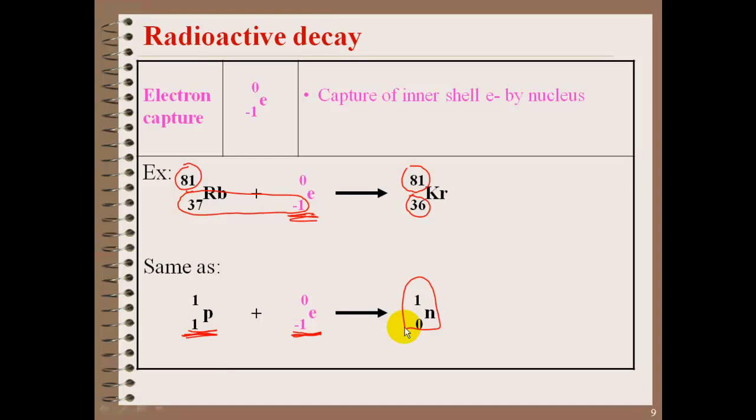When we have rubidium-81 going through an electron capture, it is going to create krypton-81. What ends up happening here is that a proton from rubidium's nucleus will collide with that electron from the electron cloud and creates a new neutron. That neutron will change the number of protons but not change the mass. So a proton and electron will collide and convert into a neutron. It's kind of the opposite of the beta particle.